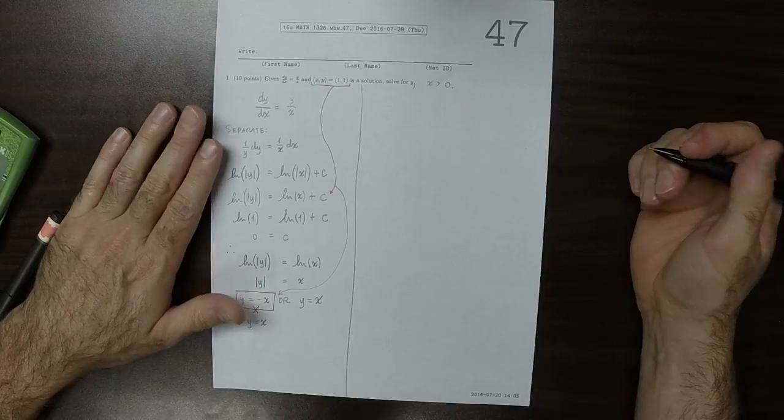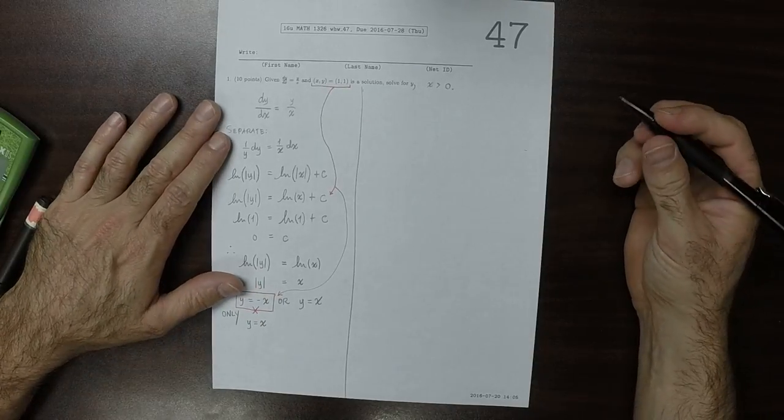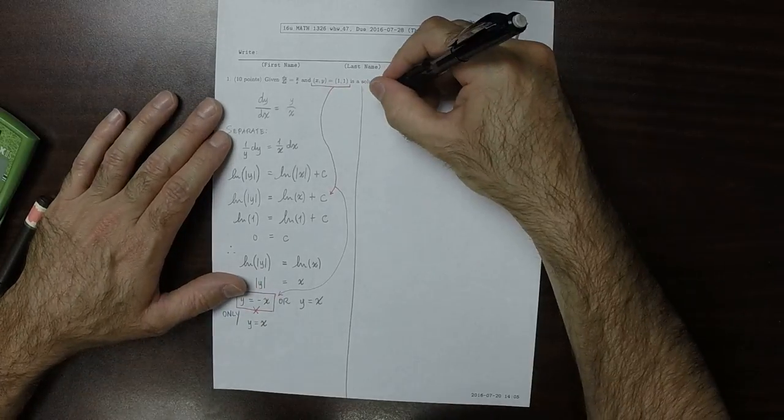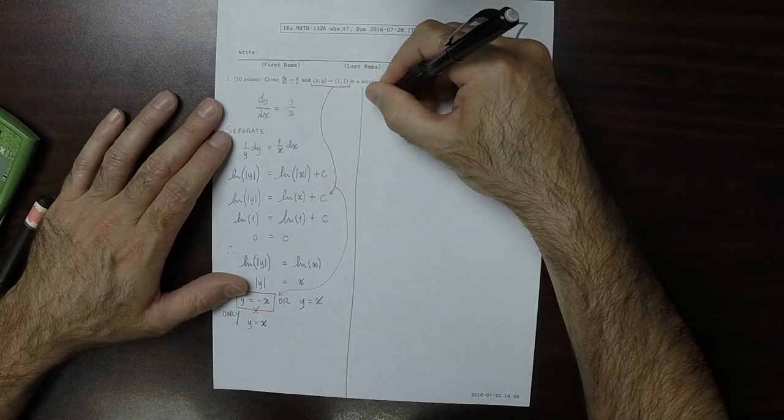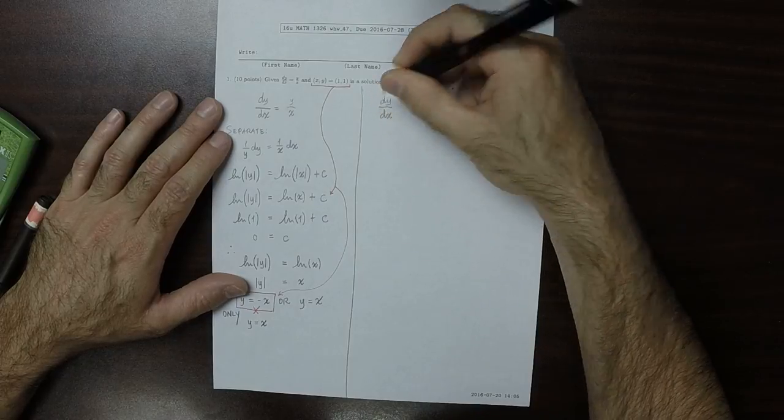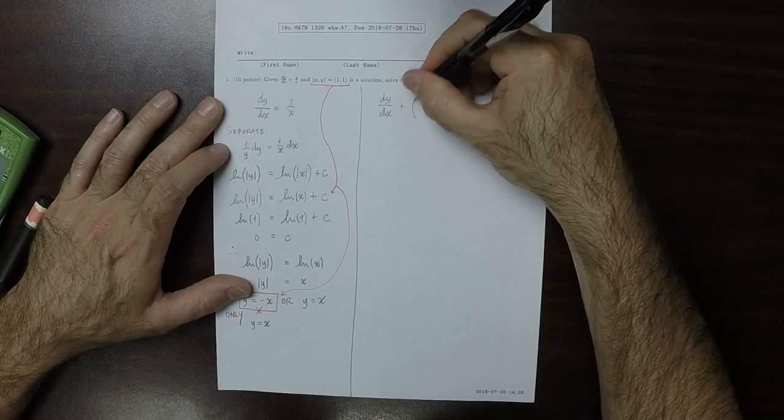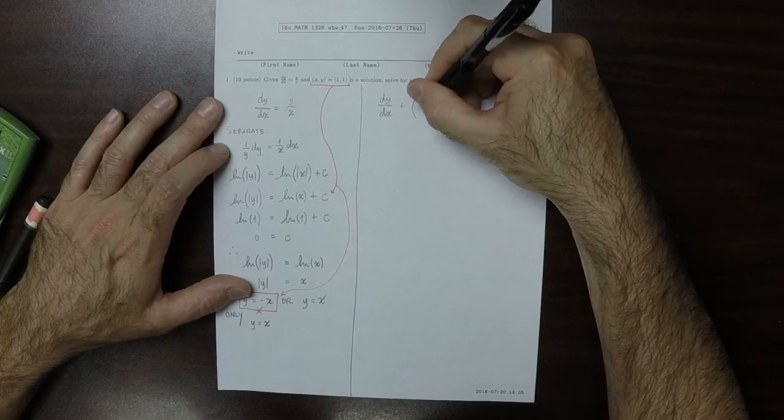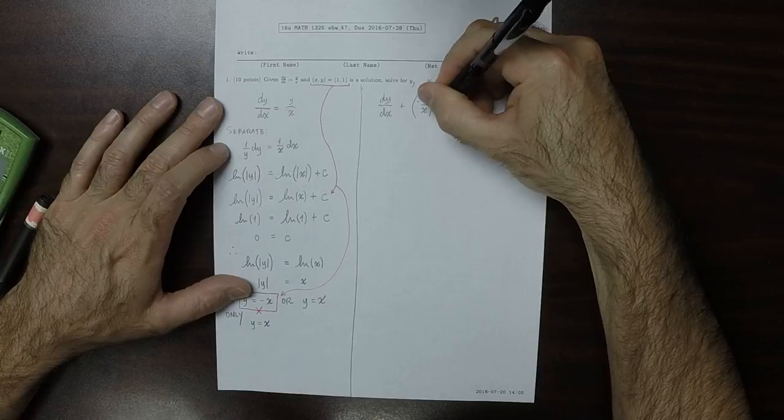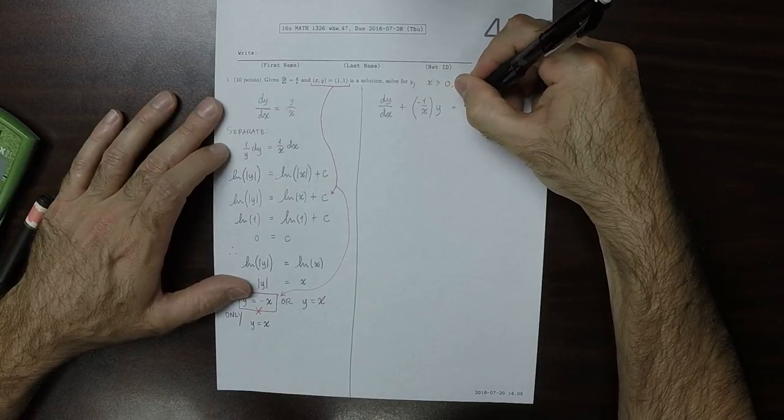Alternatively, it could be solved using an integrating factor. So then you could write dy/dx plus negative 1 over x y is equal to 0.